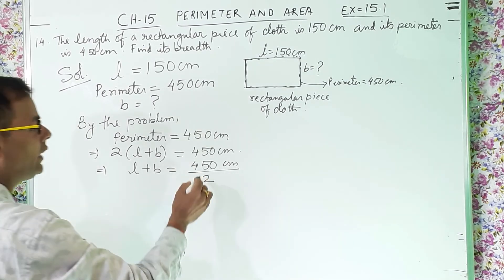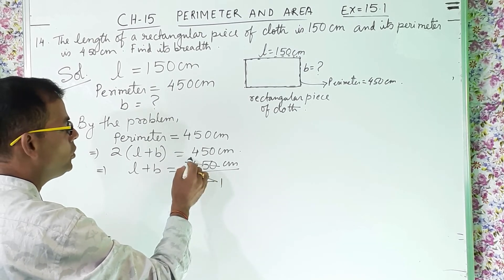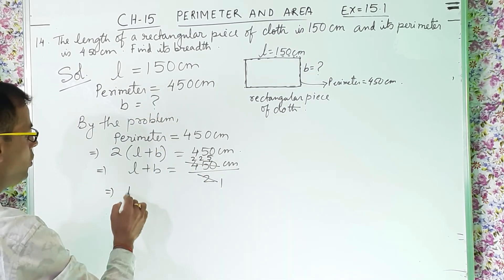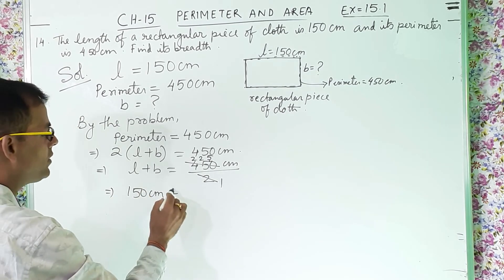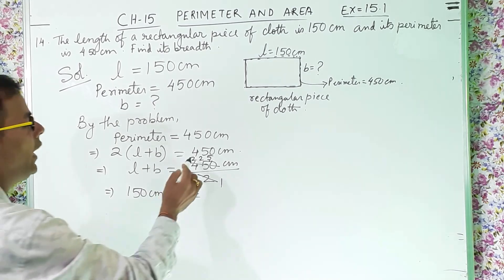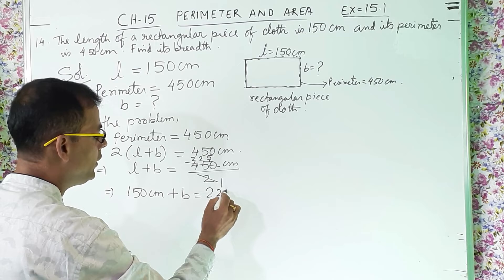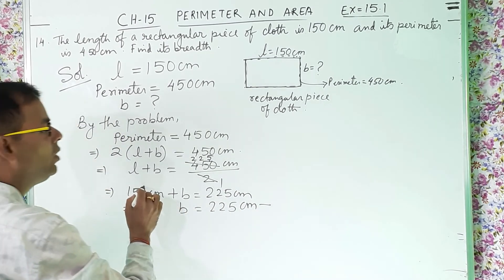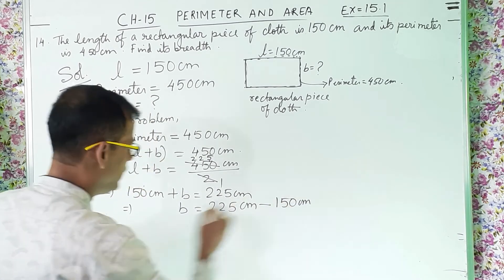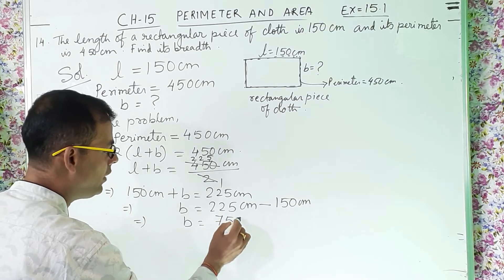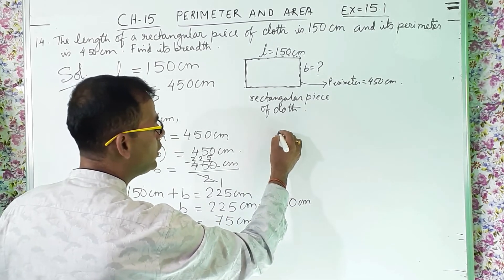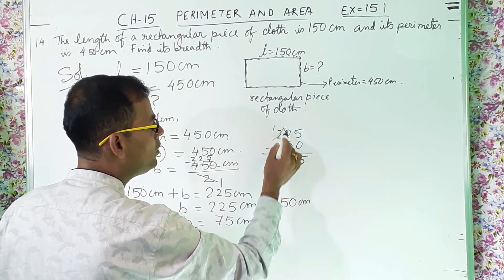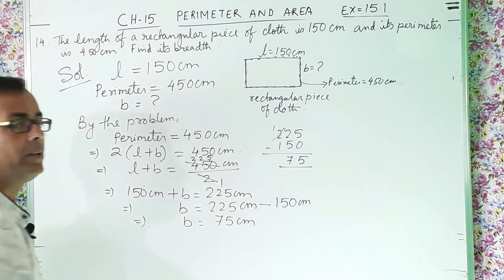We can divide it: 450 divided by 2 gives 225. Length is 150 centimeter, so 150 centimeter plus breadth equals 225 centimeter. So only breadth will be 225 centimeter minus 150 centimeter. When you subtract, you get 75 centimeter. If you cannot do it orally, do the rough work: 225 minus 150, subtract 5, you borrow, it becomes 12, 12 minus 5 is 7, so 75 centimeter.